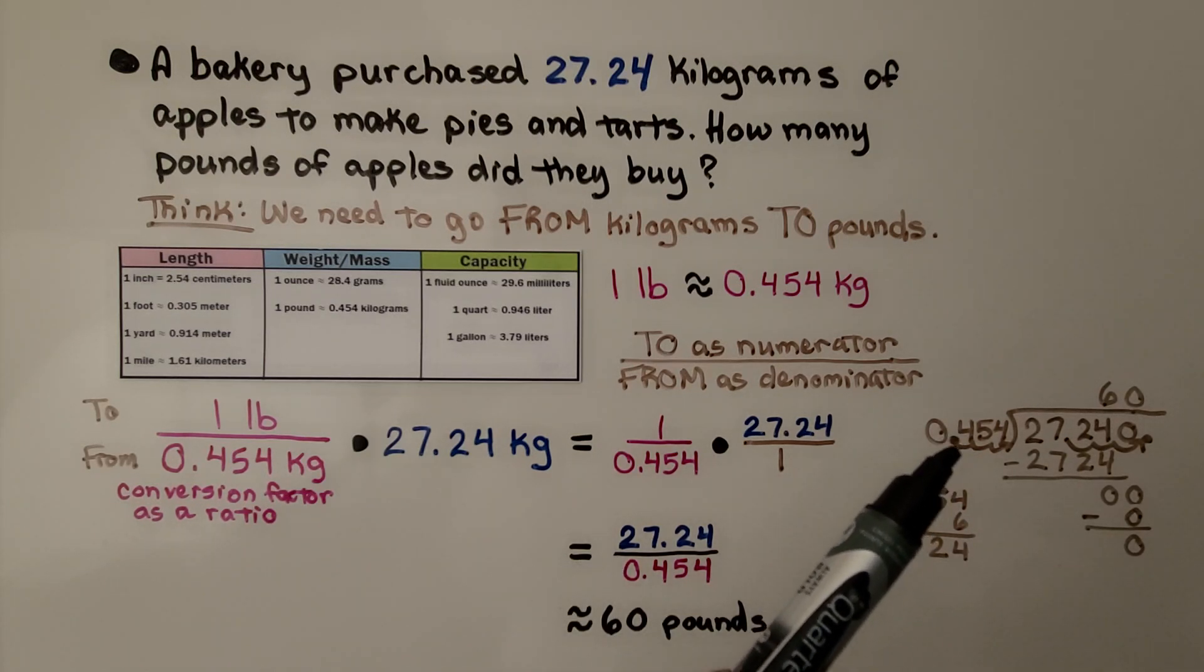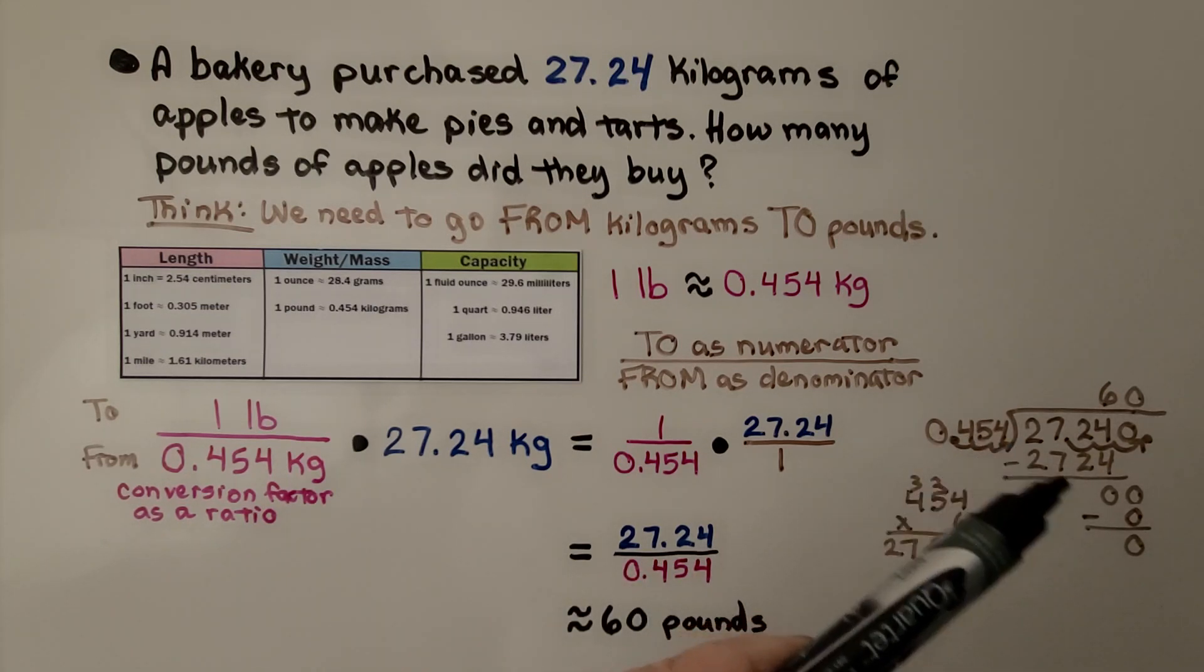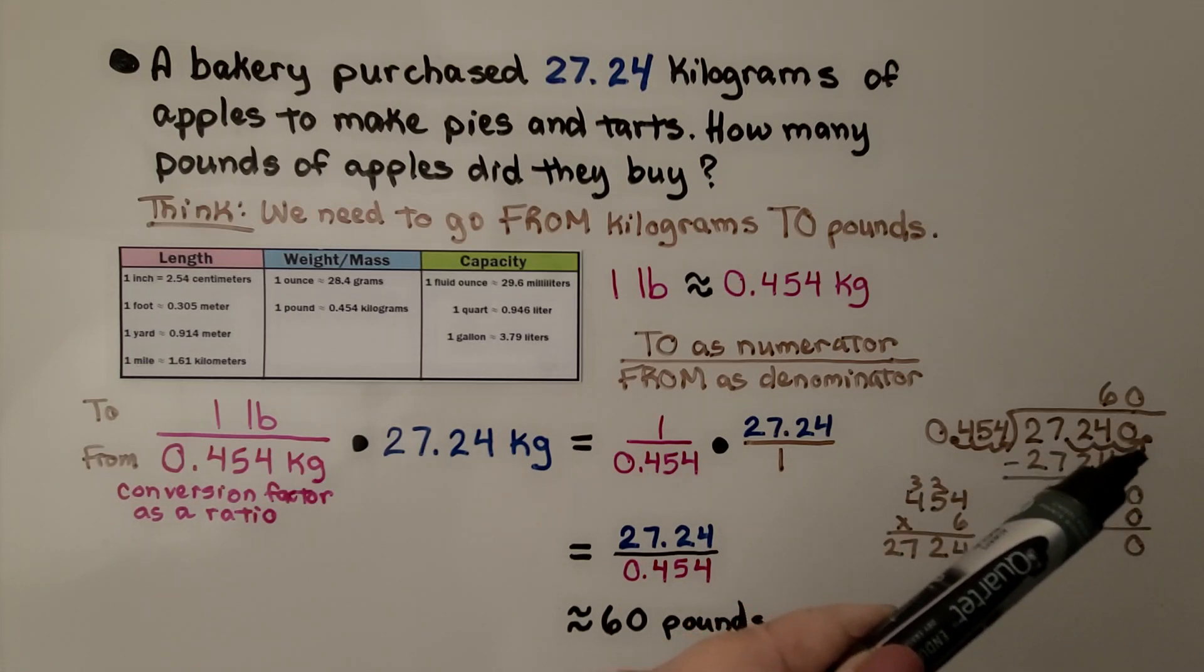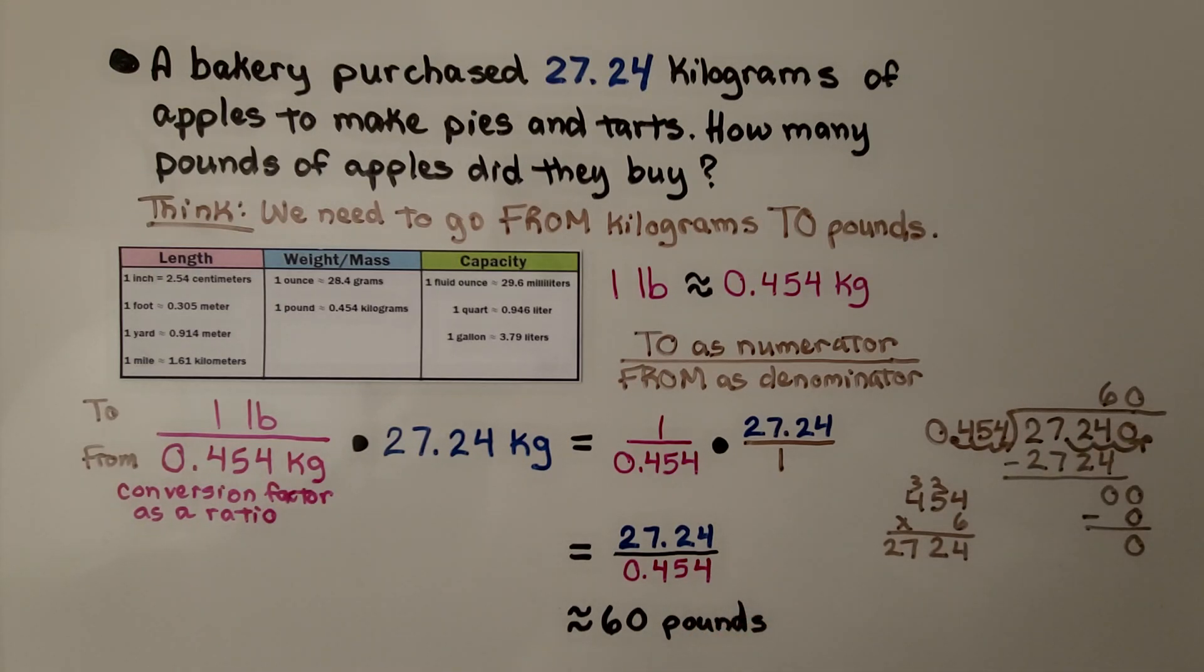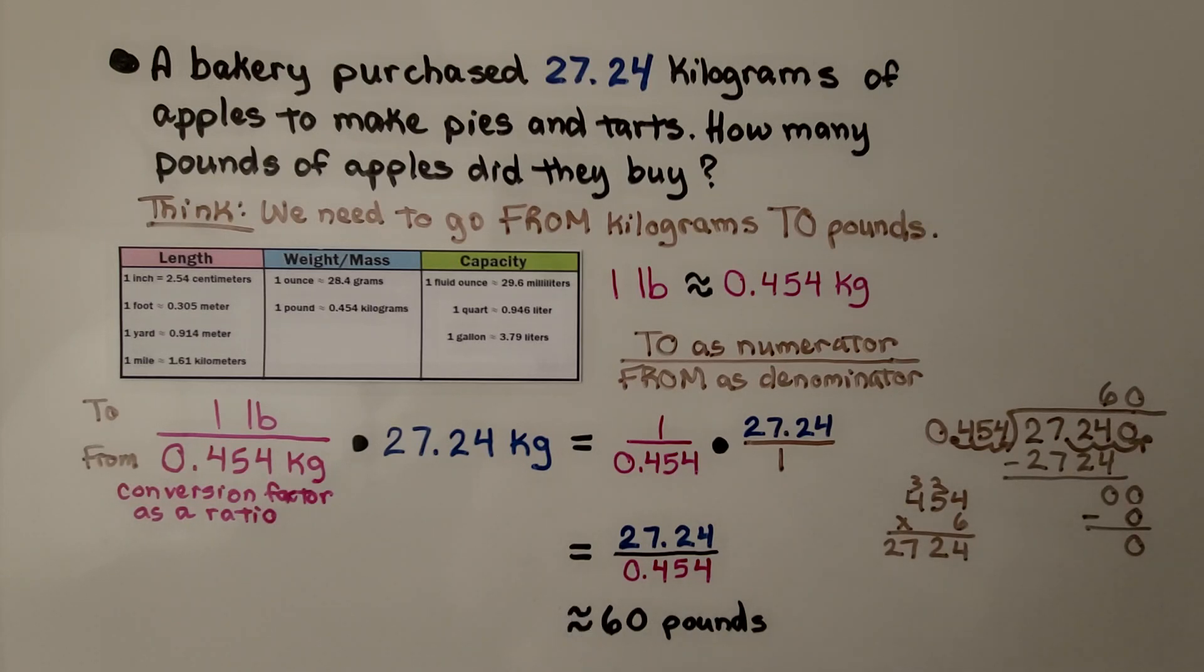For long division, remember we've got a decimal point here. We need to move it over three jumps, so we're going to move this one over three jumps and put a zero here as a placeholder. How many times can 454 fit into 27,240? We can do a little multiplication on the side. If we multiply 454 by 6, we get 2,724. Then this zero drops down. 454 fits into zero zero times. We get 60. We know it's 60 pounds of apples.